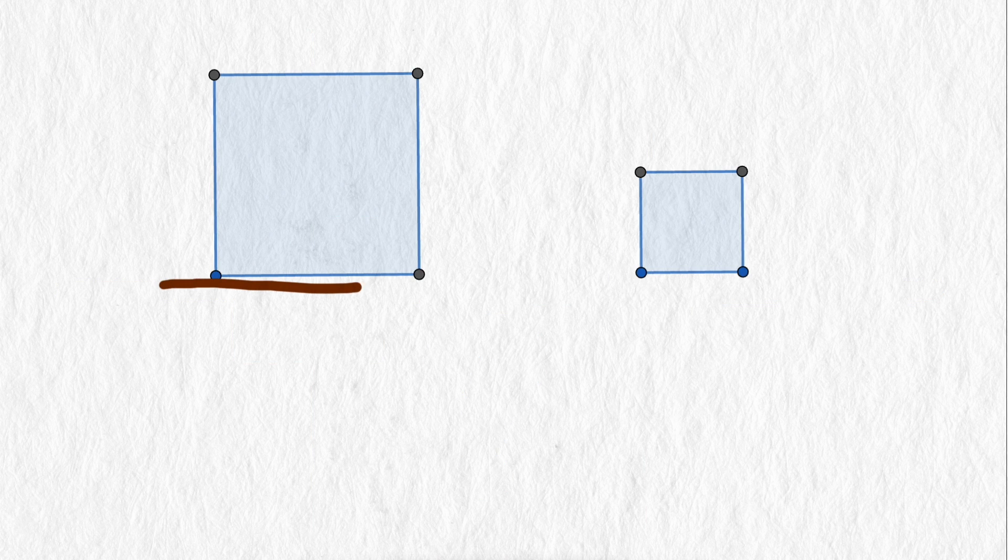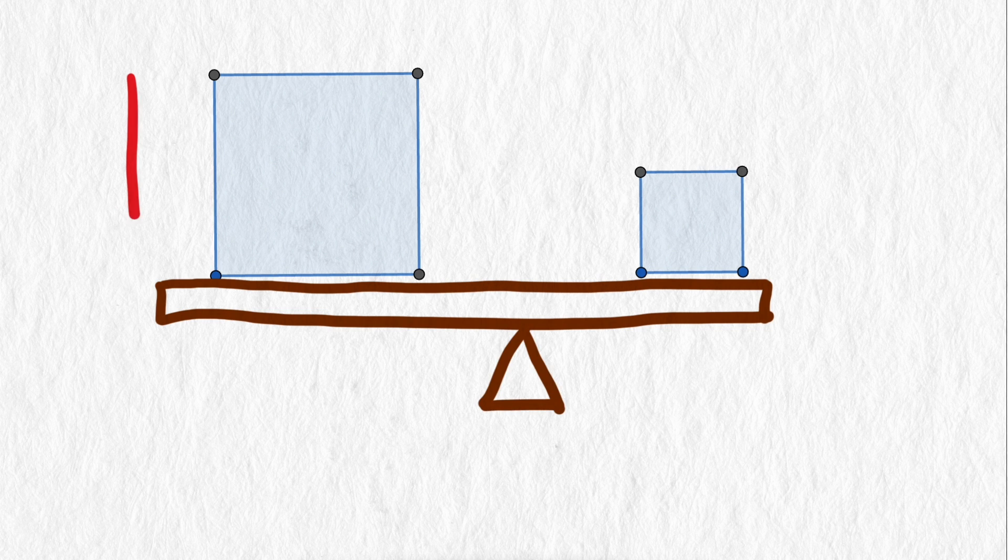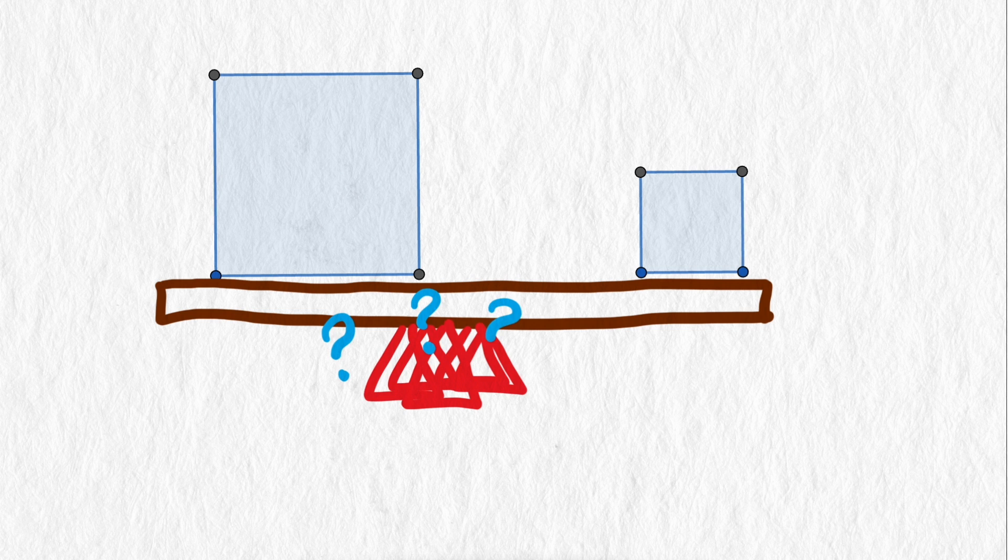Imagine we had a fulcrum and needed to balance these squares along the line. Where would you put the fulcrum? Not halfway. Intuition would say this larger square would fall, so we should move the fulcrum closer to the center of the larger square. But how far is the right amount?